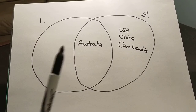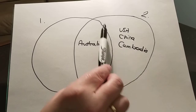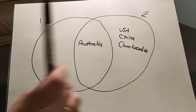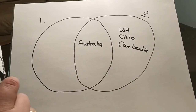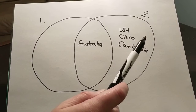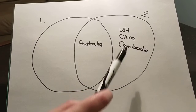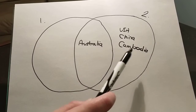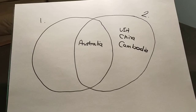Before age 18, the US was the only country outside the overlap — that was my third culture kid experience. As an adult, China and Cambodia are outside their circle — that's my third culture adult experience.